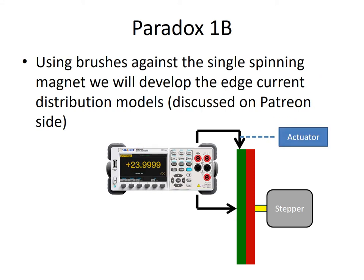Paradox 1B: we're going to use brushes against a single spinning magnet and use an actuator to move the brush so that we can quantify the edge current. Our physics software treats the edge current as one filamentary thin wire of, say, 14,000 amps that goes around the center of the magnet — the north and south sides of the disk magnet. That's fine when you're far enough away, but when you get close to the edge it's better to have a high-precision current distribution so your simulation results match your experimental results and you're confident you're not missing anything.